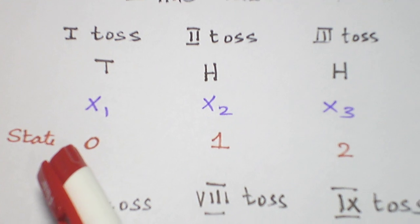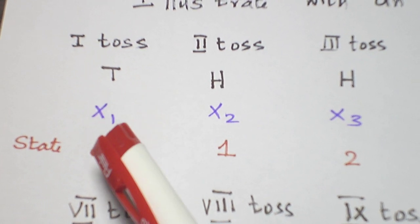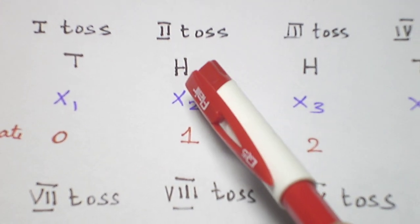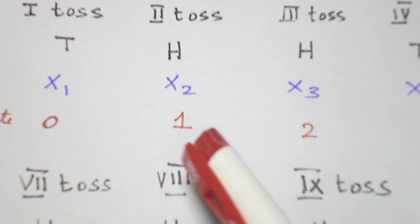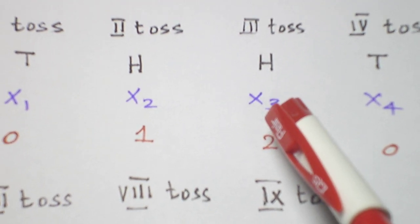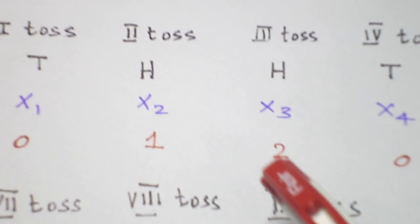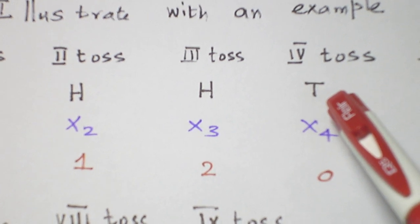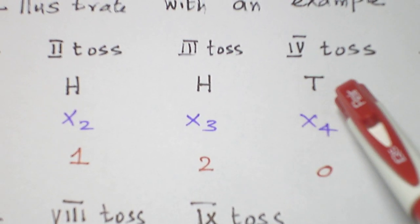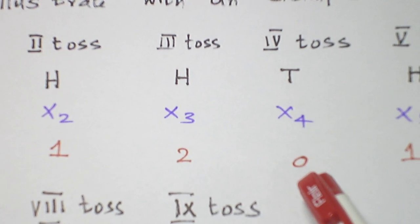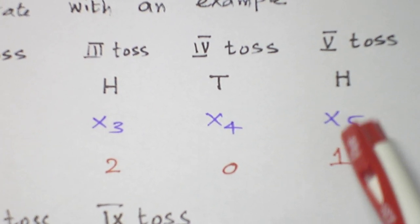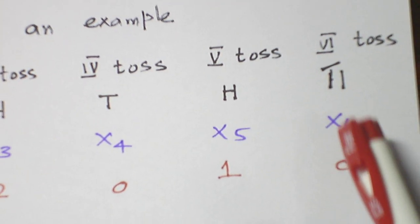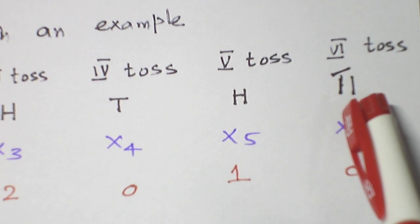In the first toss we got a tail, so zero heads — X1 equals zero. Second toss we get a head, so one head: X2 equals one. Third toss gives two continuous heads, so X3 equals two. Fourth toss there is a discontinuity — we got a tail — so it goes back to zero. Fifth toss again we got a head, so one continuous head.